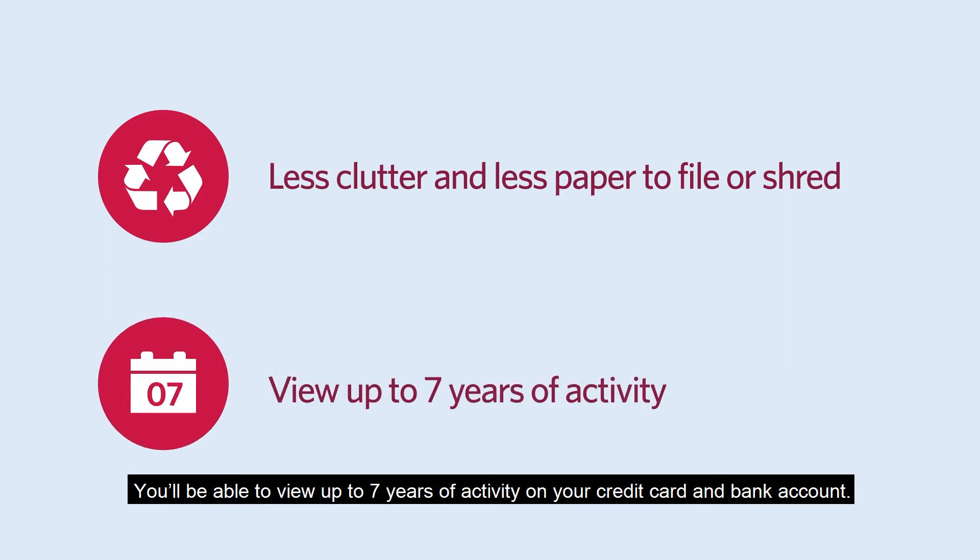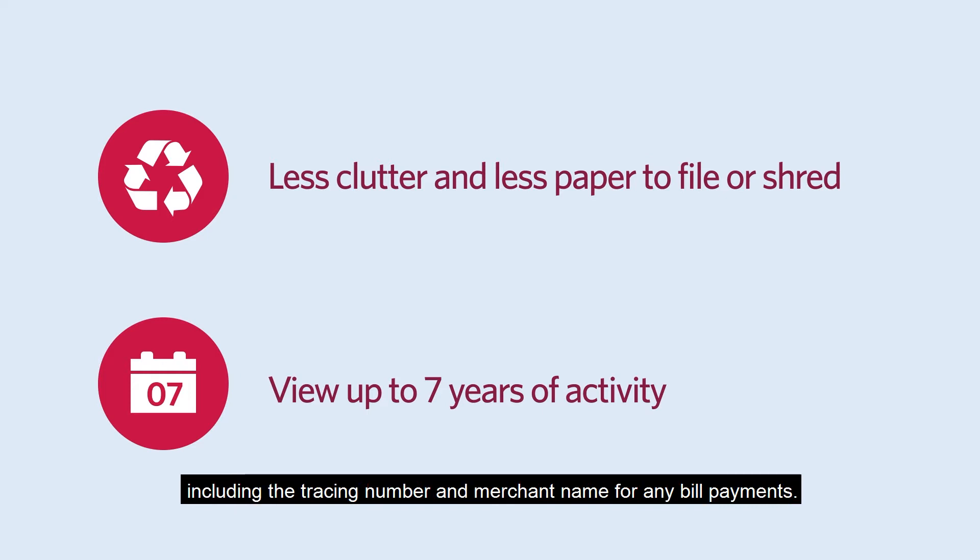You'll be able to view up to seven years of activity on your credit card and bank account. With eStatements, you'll have more detailed transaction information, including the tracing number and merchant name for any bill payments.